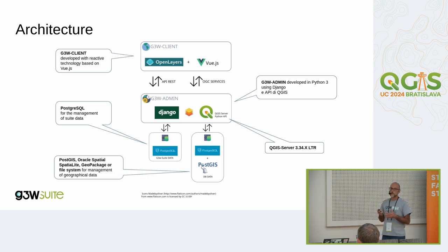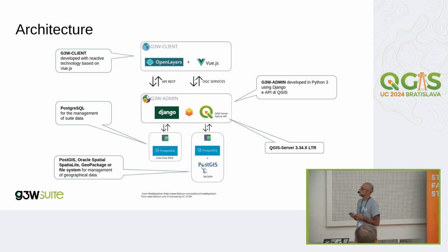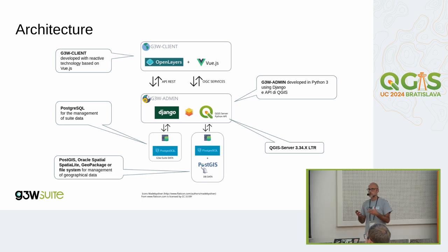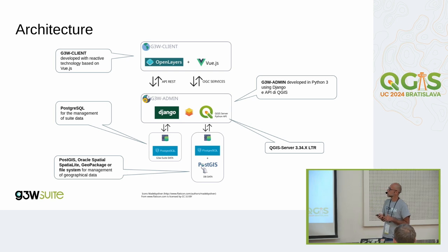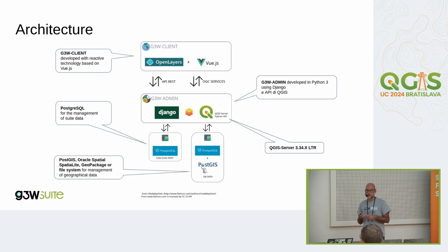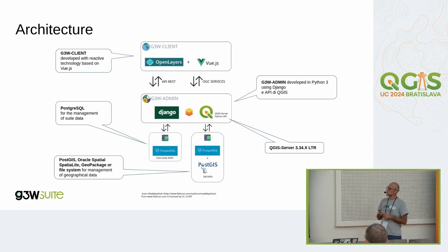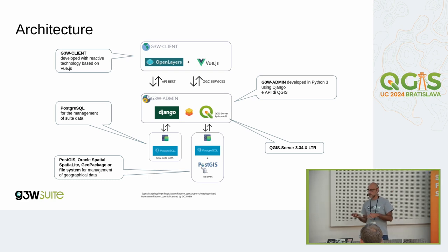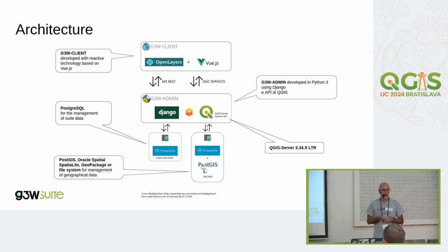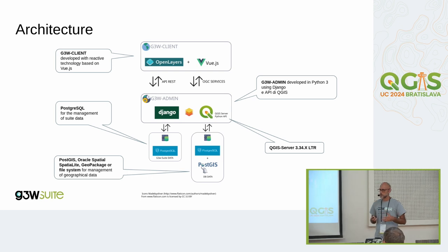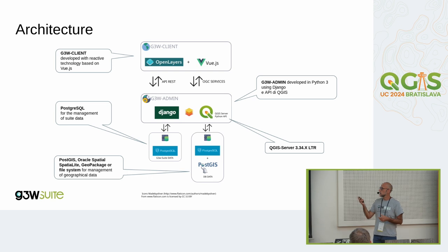G3W-Admin is fully integrated, thanks to PyQGIS API, with QGIS Server. G3W-Admin also works as administration component and as OGC services provider for WMS, WFS, and other services that QGIS Server can provide. Another role is as a REST API server for the client, to give the client configuration and other activities such as advanced online editing. At the base you can find a PostGIS database, used as an administration database for G3W-Suite and also as a geodatabase. You can also use file system geodata such as SpatiaLite, Shapefile, GeoPackage, and any geodata format that QGIS Server can read.